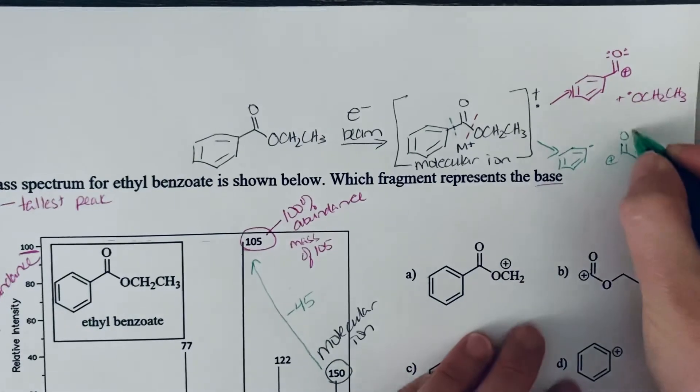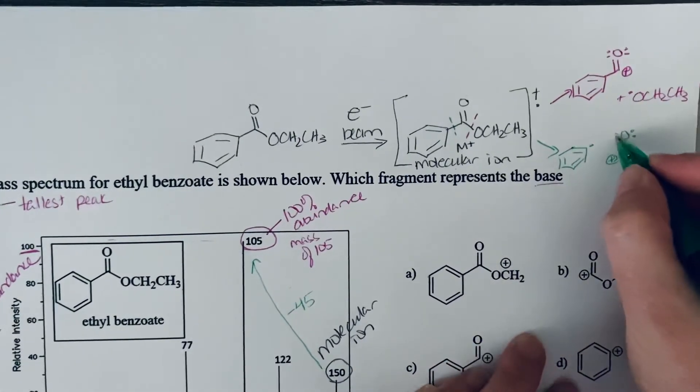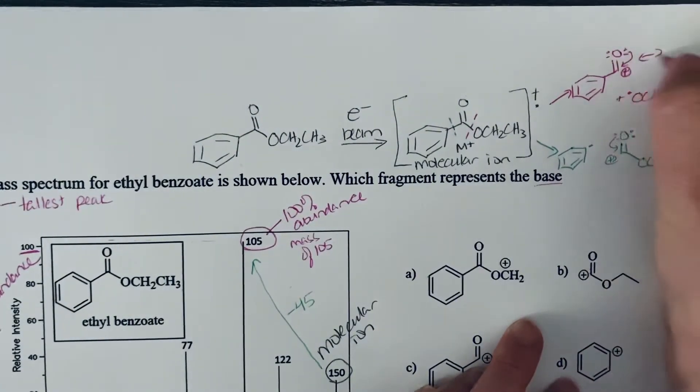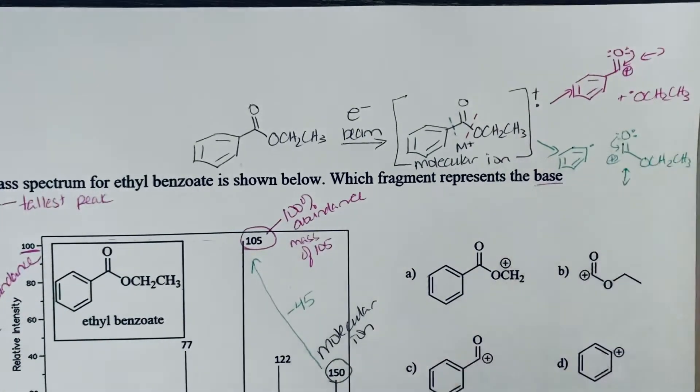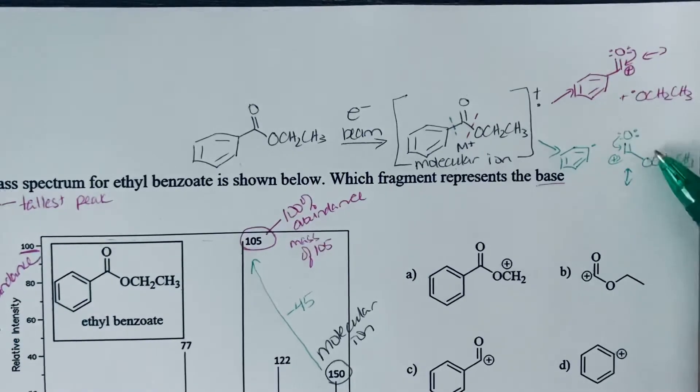Because of the resonance stabilization that takes place when you do this alpha cleavage, because we can bring these lone pairs of electrons down in resonance, that'll stabilize it. So I'd expect that either this or this is going to be our major fragment.